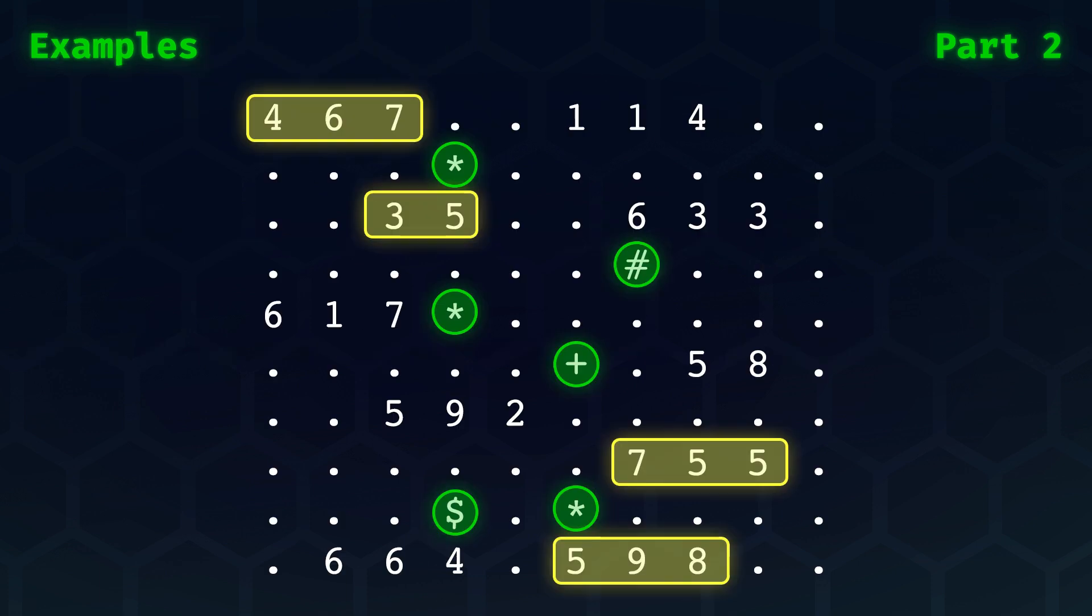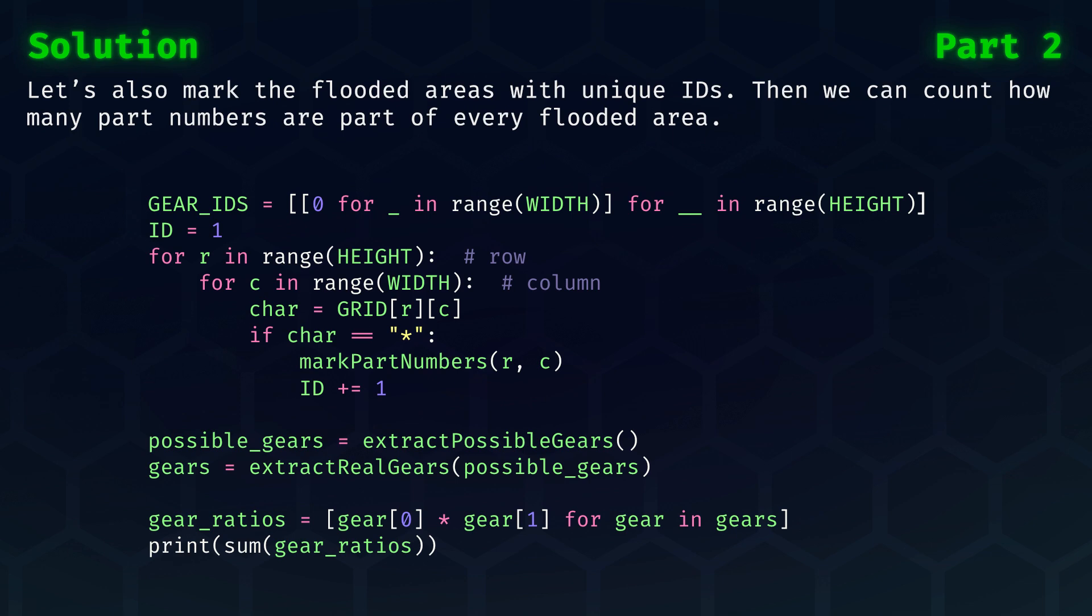Looking at the same example as for part one, we can see that there are only two green symbols, which are a star, and that are adjacent to two part numbers. Let's see how we can modify our code to solve part two. Let's still do the flood fill, but let's only mark when the symbol is a star, and then also mark the flooded areas with unique IDs, because then we can count how many part numbers are part of every flooded area.